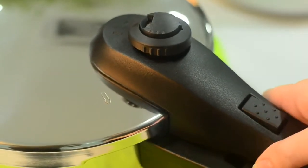Once the red indicator light has dropped down, open the lid by pressing this release button and turning the handle anti-clockwise.